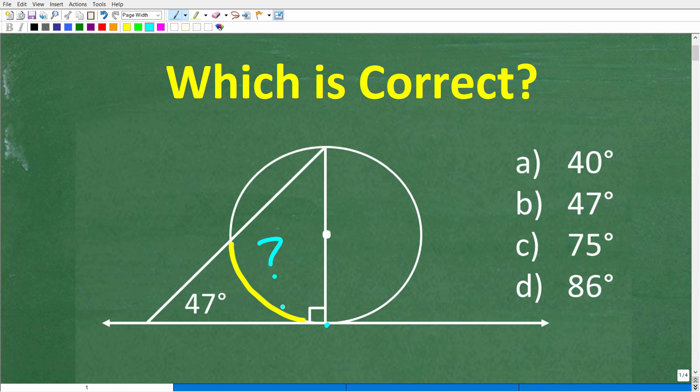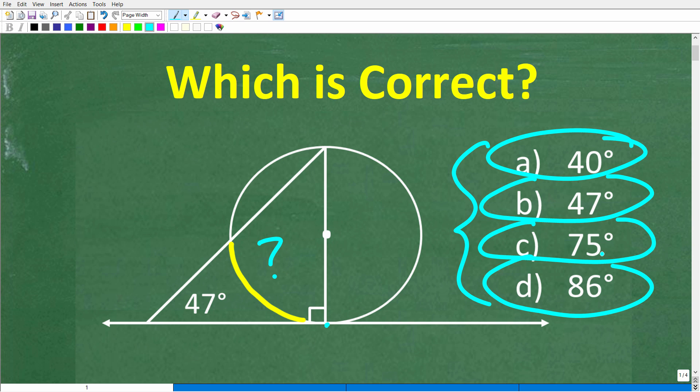This is a multiple-choice question. Let's take a look at our answers. A is 40 degrees, B is 47 degrees, C is 75 degrees, and D is 86 degrees. If you know the answer, put that into the comments section. I'll share the correct answer in just one second. Then, of course, I'm going to fully explain how to solve this problem step by step.